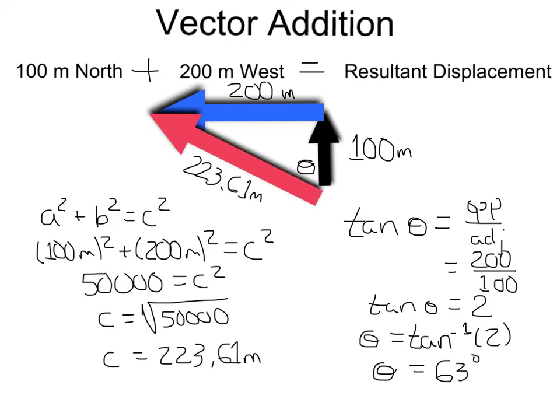So this angle here then is 63. Our final answer for our resultant displacement would then be 223.61 meters at 63 degrees.